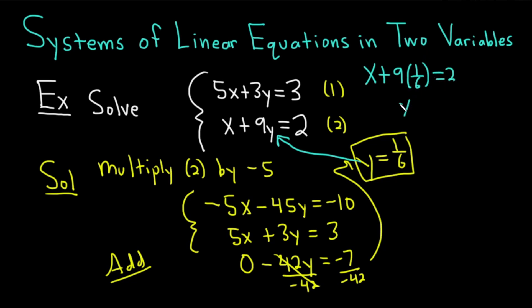Well, 9 over 6 is really 3 over 2. So we have x plus 3 halves equals 2. Now, I'm going to write 2 as 4 halves, just so it's easier to subtract. So now we have minus 3 halves, minus 3 halves. We have x equals 1 half.